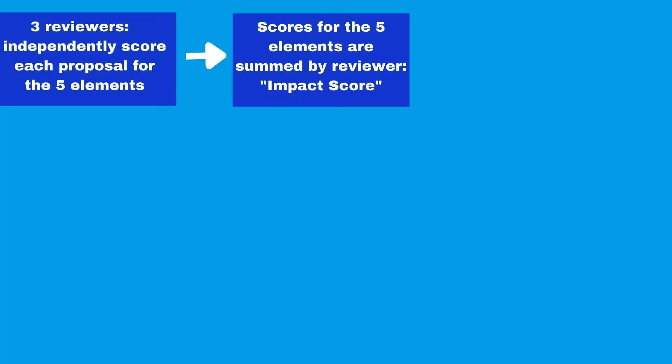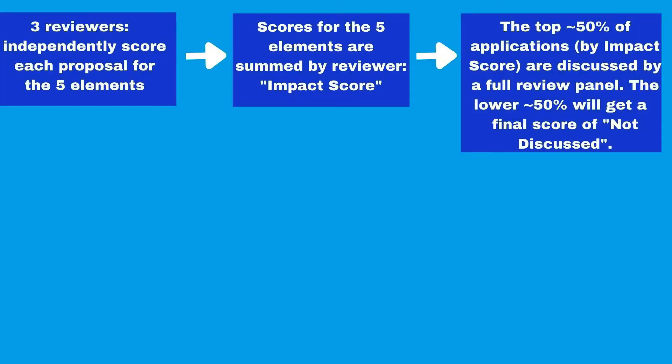In step two, those scores are summed by reviewer. Each reviewer adds their five element scores together to get an initial impact score, giving three different initial scores from three reviewers. Within the panel, all of those sums are ranked, and the panel manager takes approximately the top 50% of applications — as determined by that initial impact score — and sends them to the full review panel.